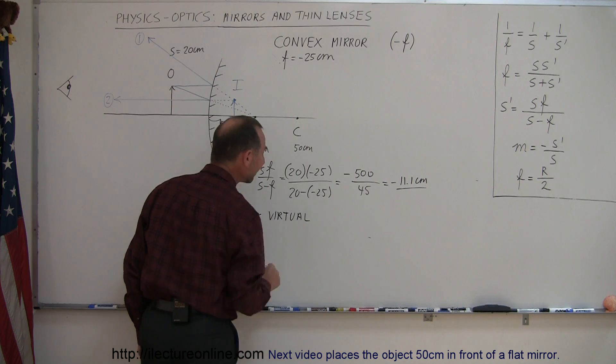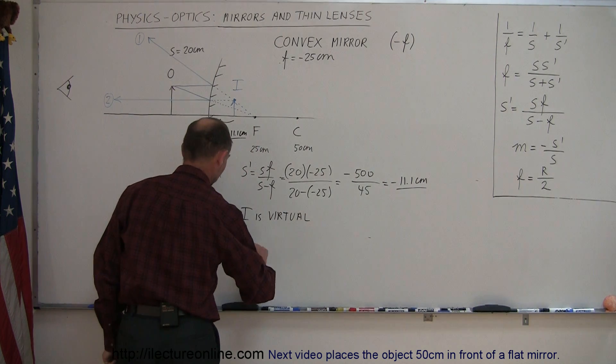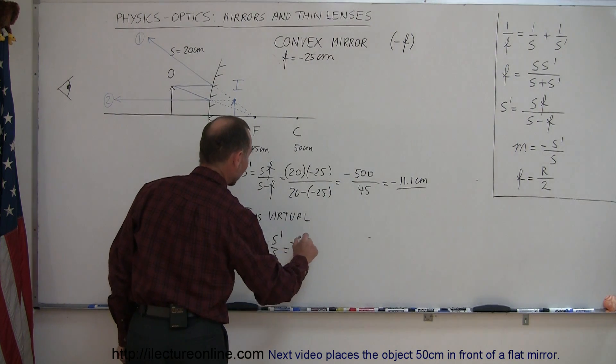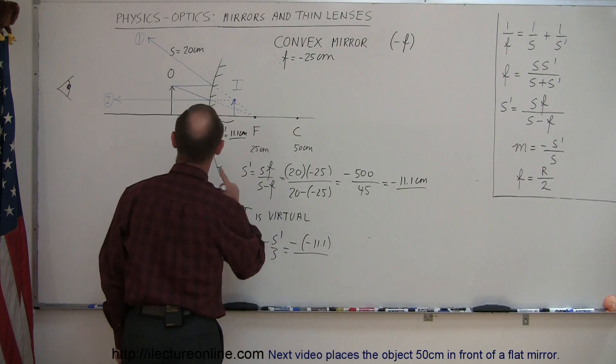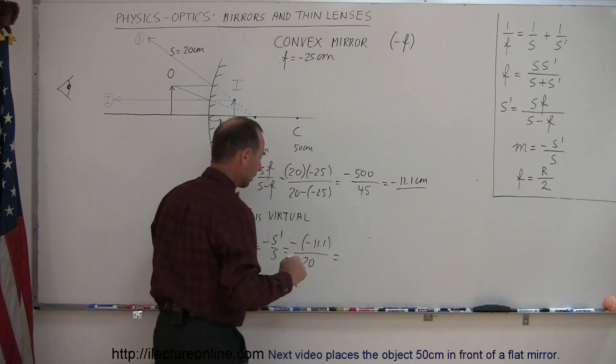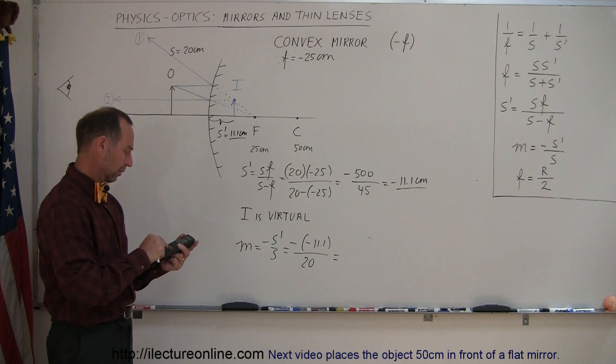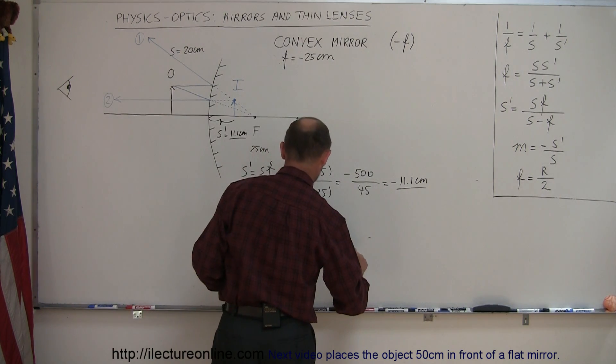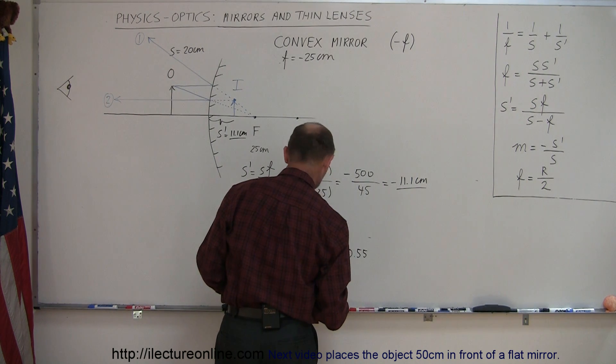The brain just thinks it's there when it really isn't. Then to find the magnification we use the equation M is equal to, right there, we have minus S prime over S. That would be minus D minus 11.1 divided by S which was 20. And that looks like we have, looks like about 11.1 divided by 20. It's equal to a positive 0.555 or 0.55 is good enough.